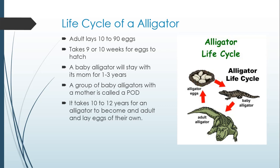Next up, we have the life cycle of an alligator. An adult lays 10 to 90 eggs at a time, and the eggs take 9 to 10 weeks to hatch. Then the baby alligator will actually live with its mom for 1 to 3 years. A fun fact is that a group of baby alligators with their mom is called a pod.